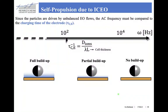Since the particles are driven by unbalanced electroosmotic flows near the underlying conductive surface, we need to make sure that the frequency of the electric field is small enough so that the electrical double layer of the electrode is able to form entirely or at least partially. This is the typical charging time of the electrode — the same as for particles, except that here we use the cell thickness instead of the particle radius. This charging time is often of the order of 100 Hz.